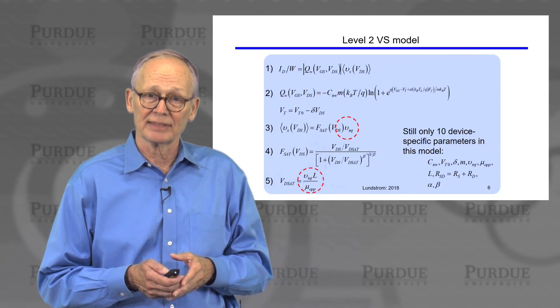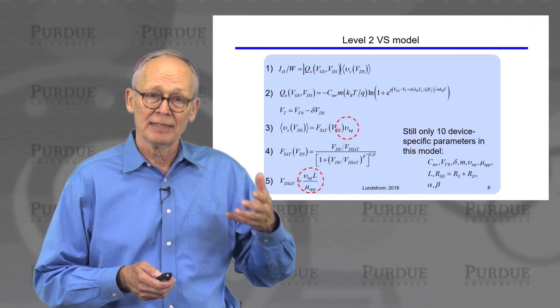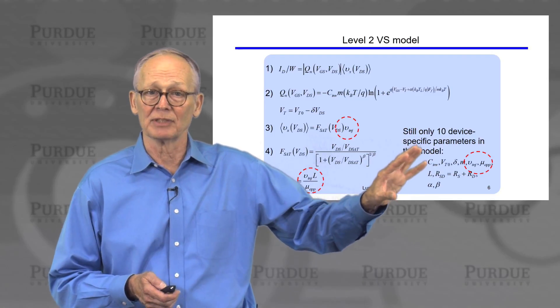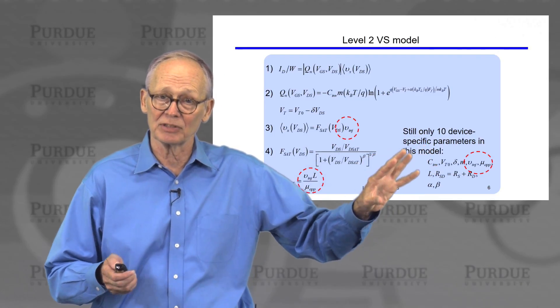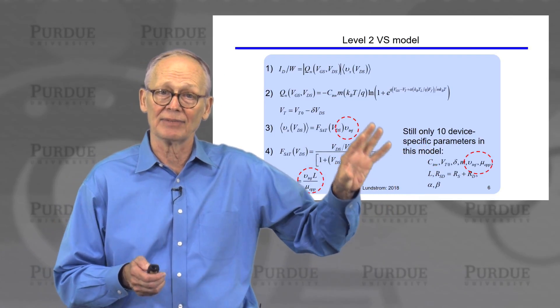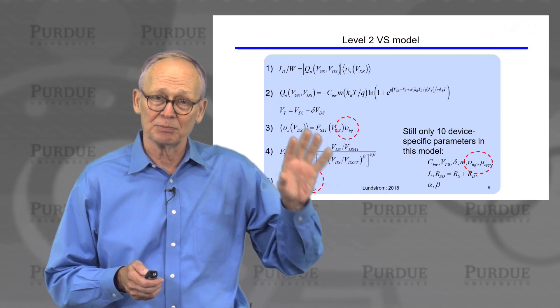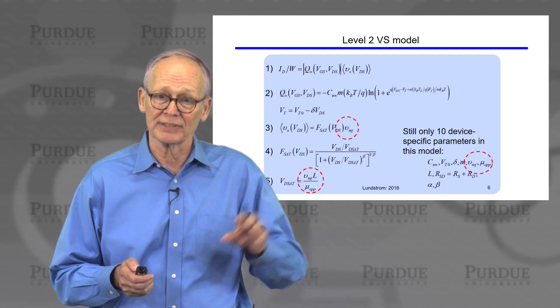We replace it in the drain saturation voltage. We replace the V_sat by V_injection, mu_n by mu_apparent. And we have two well-defined parameters. We have the same number of parameters in our model. We just now have a sound physical basis for understanding what these two parameters mean physically.